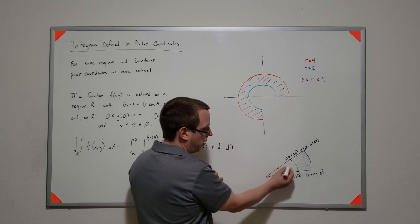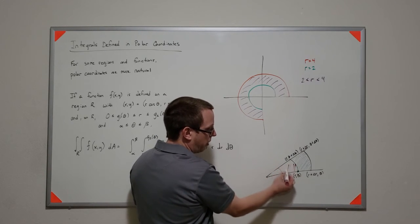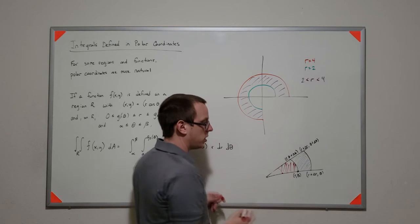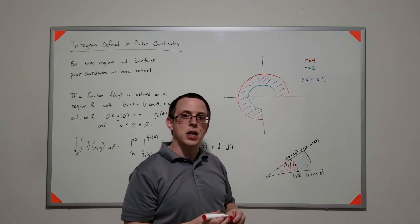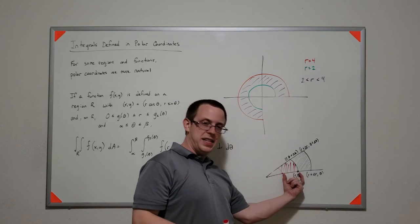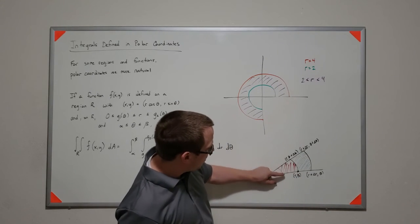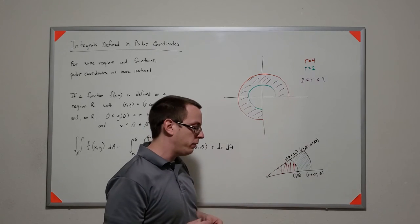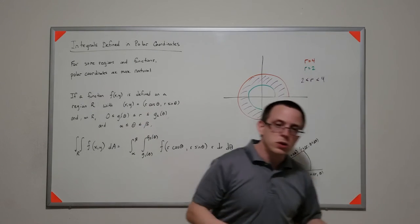If you were to take the area of this slice and take the area of that slice, they're actually not the same area, even though they're the same distance in Δr and the same Δθ in angle difference.